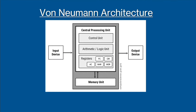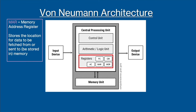There are five main registers that you need to know about, and they are shown here. Firstly, we have the MAR, or the memory address register. This stores the location for data to be fetched from, or sent to, meaning stored in memory.